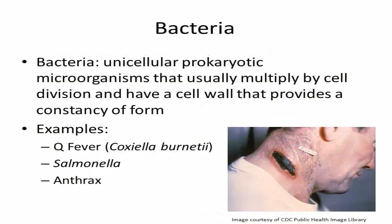The next group of infectious agents are bacteria. Bacteria are single-celled microorganisms that usually multiply by cell division and have a cell wall that provides consistency of form. Unlike viruses, you can see bacteria under a light microscope. Several examples of zoonotic